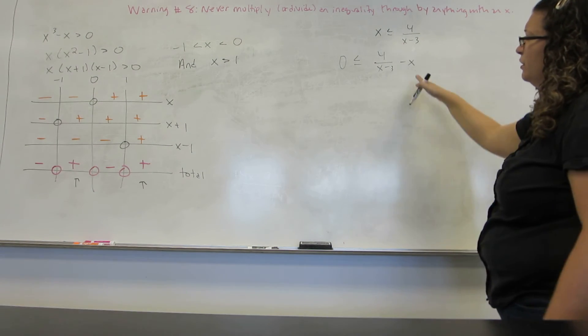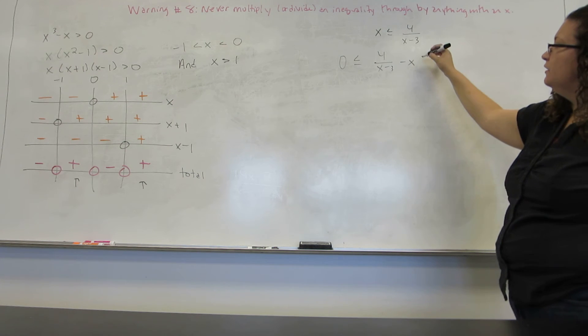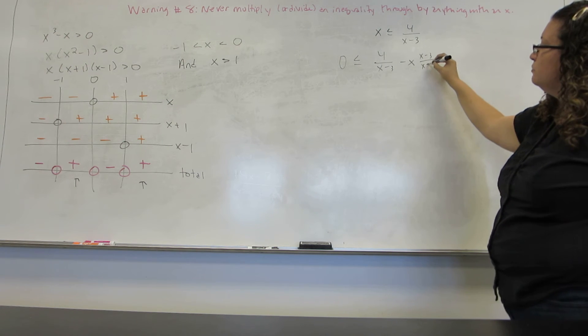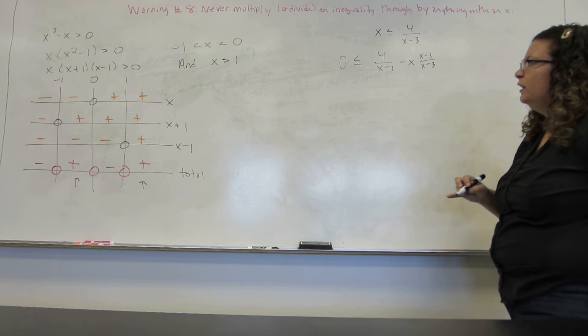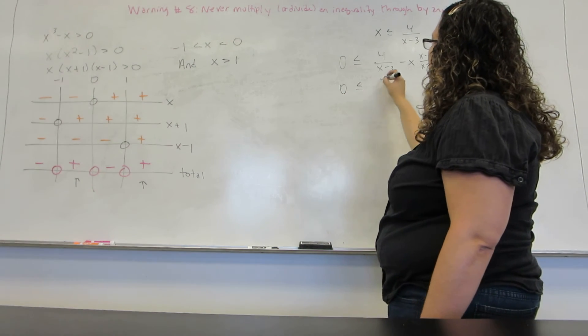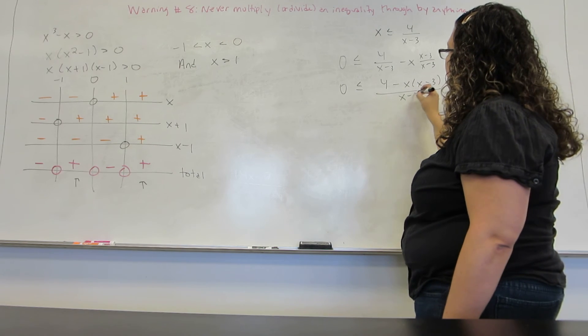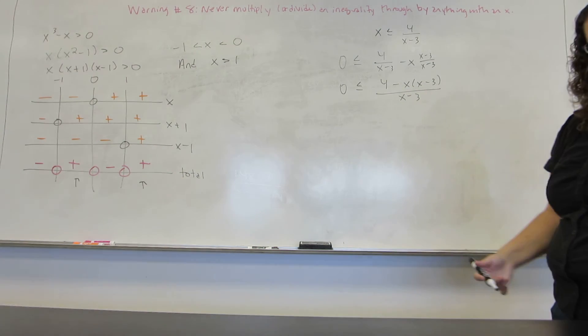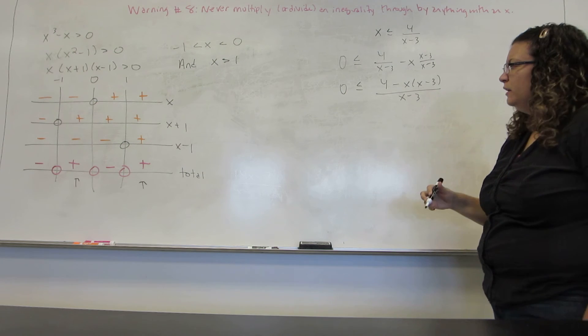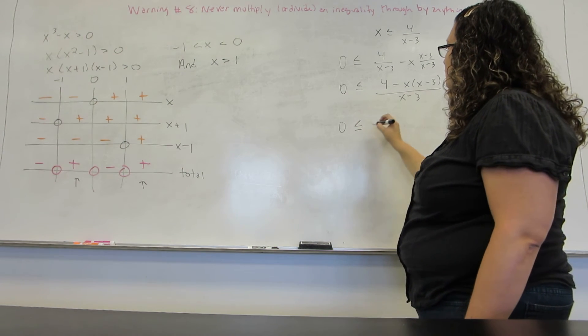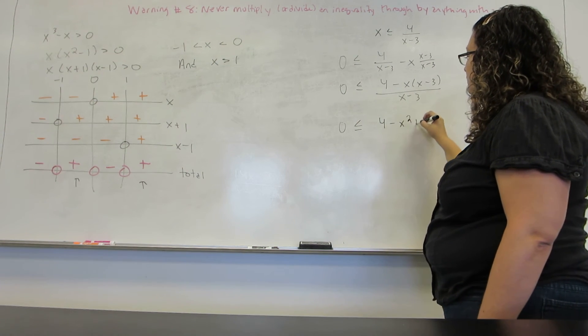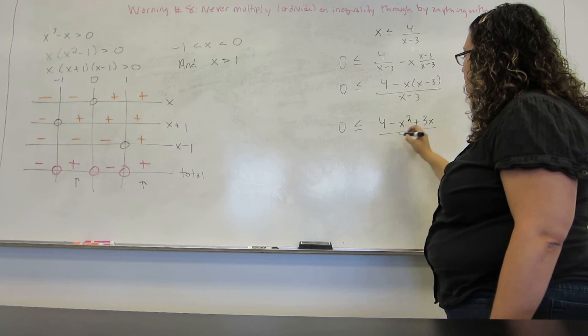Now in order to deal with this I have to add the fractions. So I'm going to multiply this term by X minus 3 over X minus 3 so that I can properly add the fractions. Just like last time we added fractions, I now have to multiply off the top so I can rewrite it. So I end up with 4 minus X squared plus 3X on top.